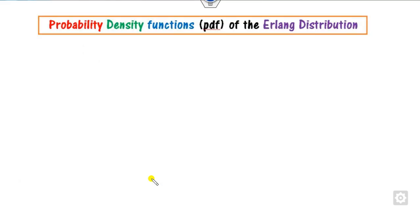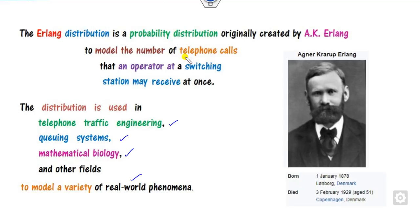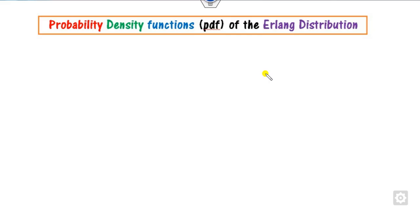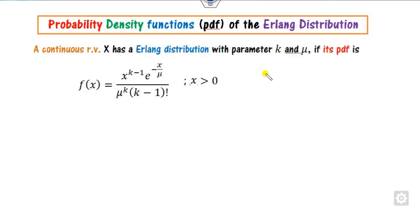What is the probability density function of the Erlang distribution? It is basically motivated from the exponential distribution, because we all know that whenever there are telephone calls, the most suitable distribution is the exponential distribution. So this Erlang distribution is the generalization of the exponential distribution. We will see the PDF of this distribution.